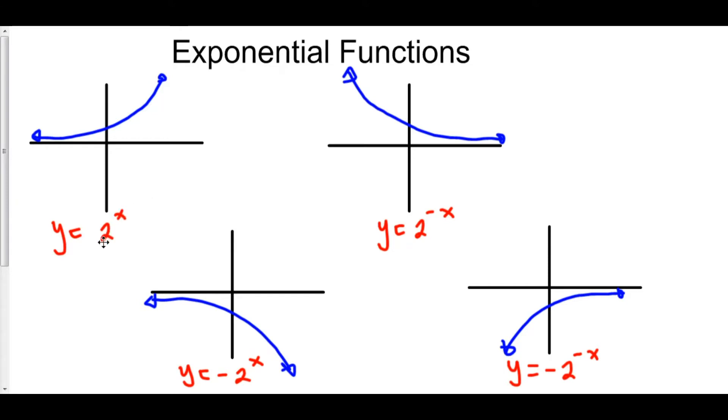When x is equal to 0, 2 to the 0, then y is equal to 1. When x is equal to negative 1, then y is equal to 1 half. When x is equal to negative 2, y is 1 fourth. When x is negative 3, y is 1 eighth, and so on and so forth until y approaches 0.